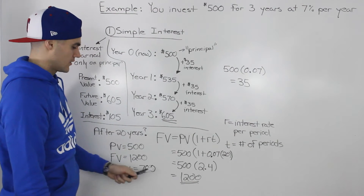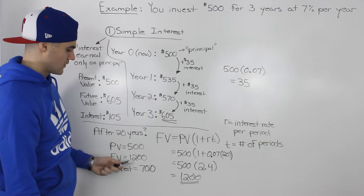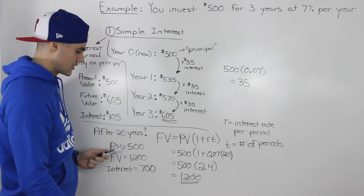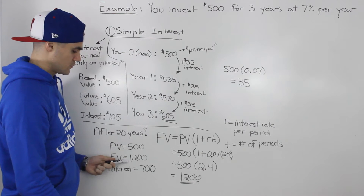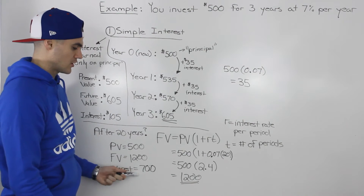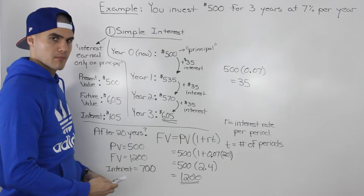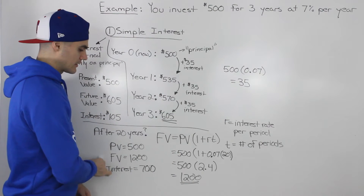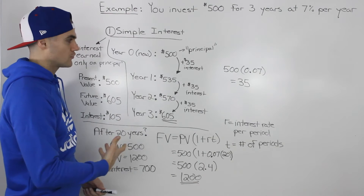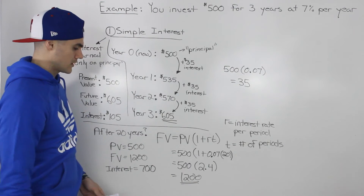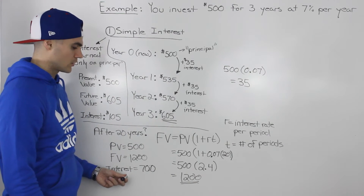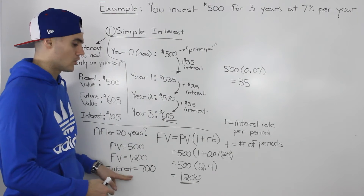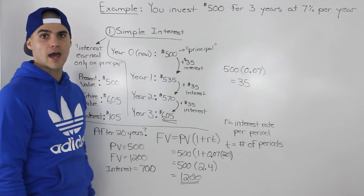Summarizing that scenario: present value is $500, future value is $1,200, so the interest earned over 20 years was $700. I highly recommend making a little summary like this for all questions until you get comfortable with the time value of money, because these summaries will be especially useful when we get into more complex questions dealing with loans and mortgages.